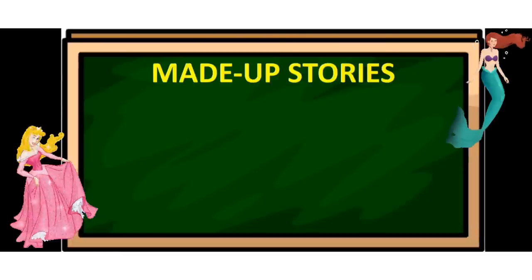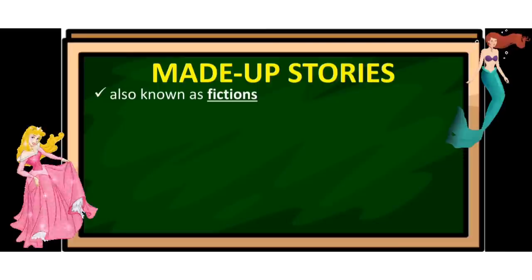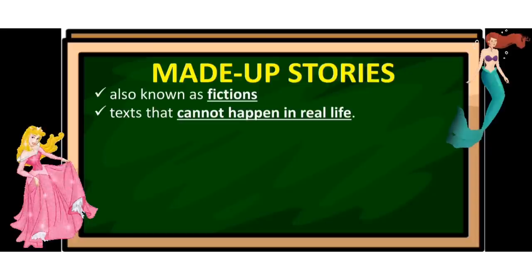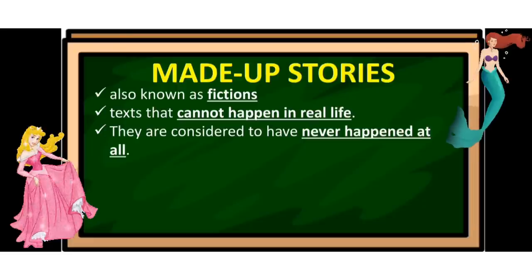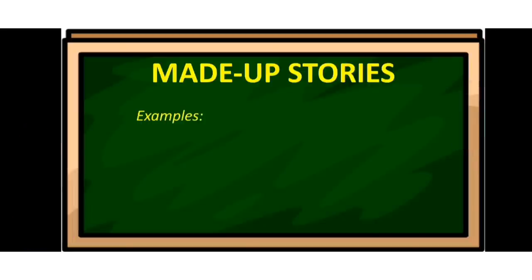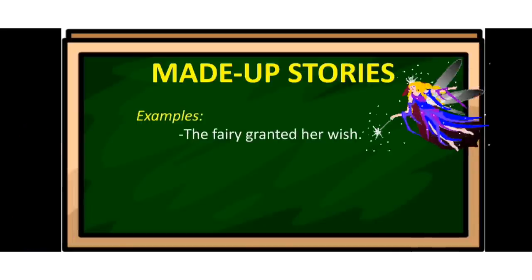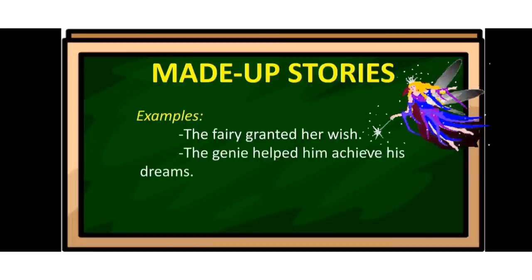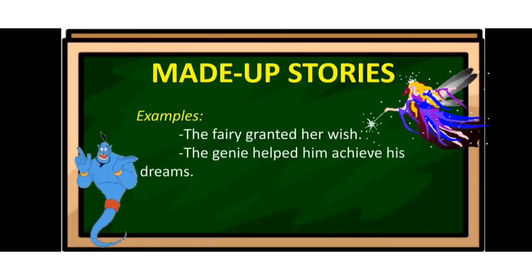So what do we mean by made-up stories? They are known as fiction. When we say fiction, those are things created from the imagination — texts that cannot happen in real life. They are considered to have never happened at all and are written for amusement or entertainment purposes only. Examples of made-up stories: 'The fairy granted her wish' and 'The genie helped him achieve his dreams.'